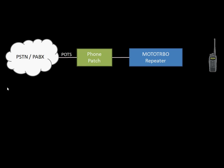If a telephone user wants to make a phone call, they first dial the telephone number of the phone patch — a regular telephone number handled by the PABX or telephone exchange. The call arrives at the phone patch, which rings, presents ring voltage, answers the call, and puts the audio from the phone line through to the Motorola Turbo repeater. Some phone patches also provide voice prompts, such as 'please dial the number required.'